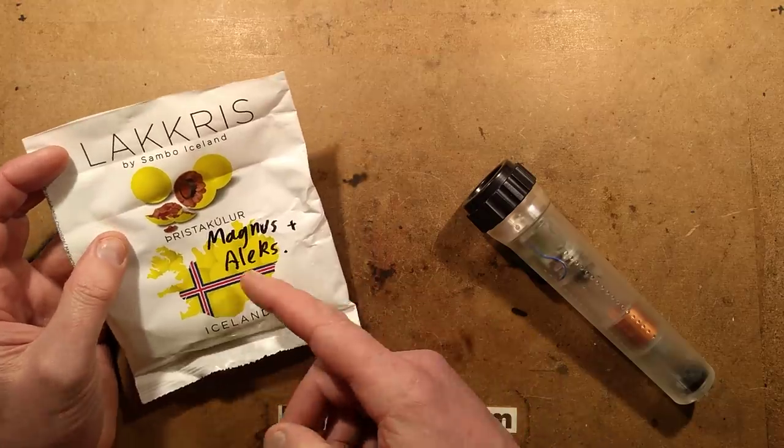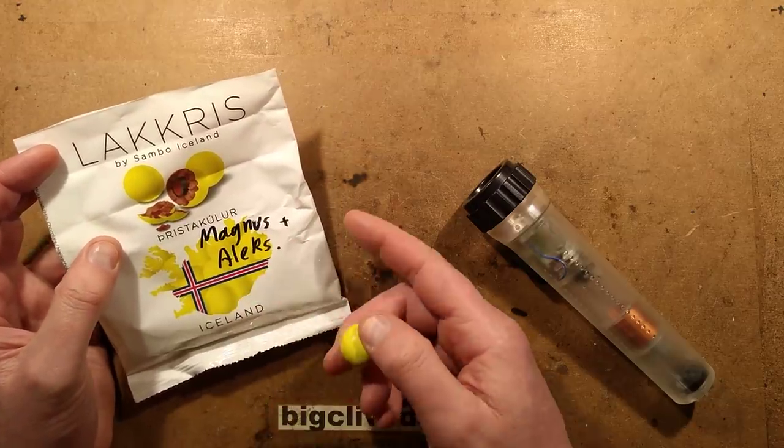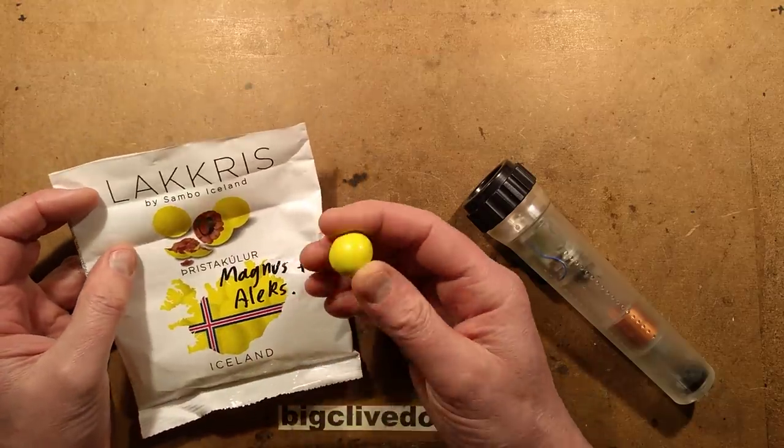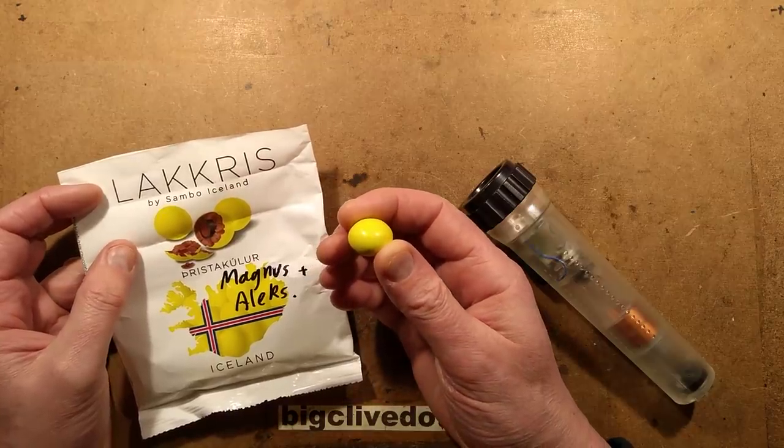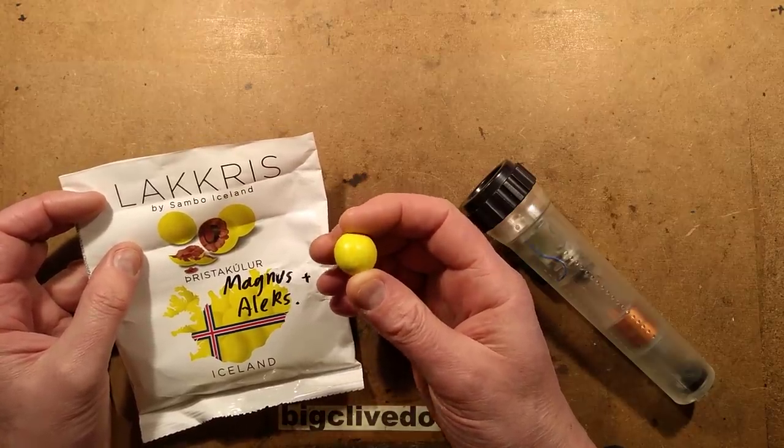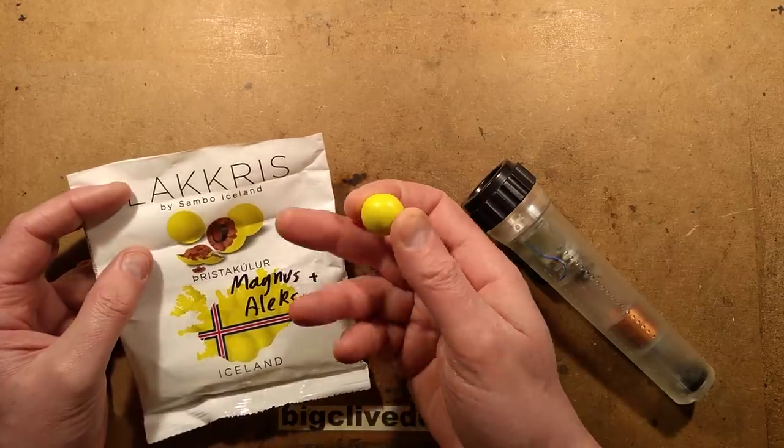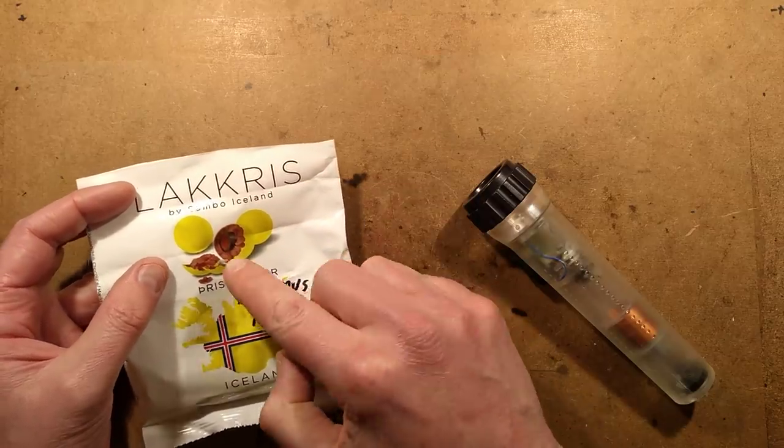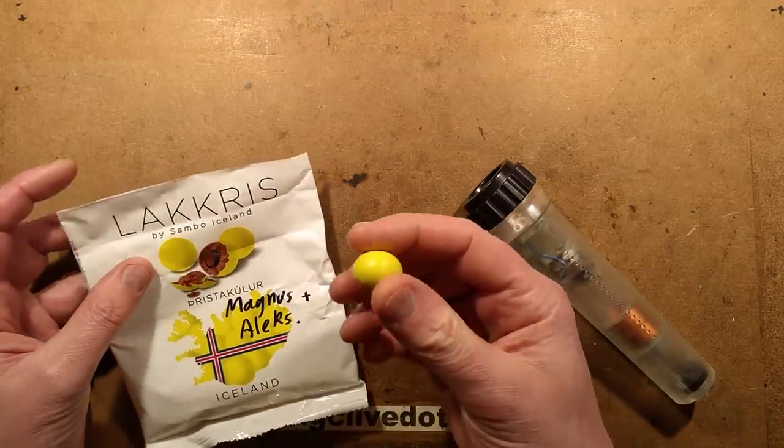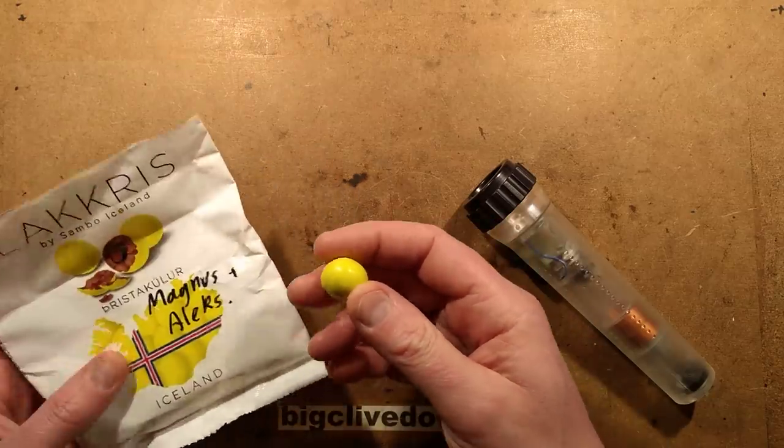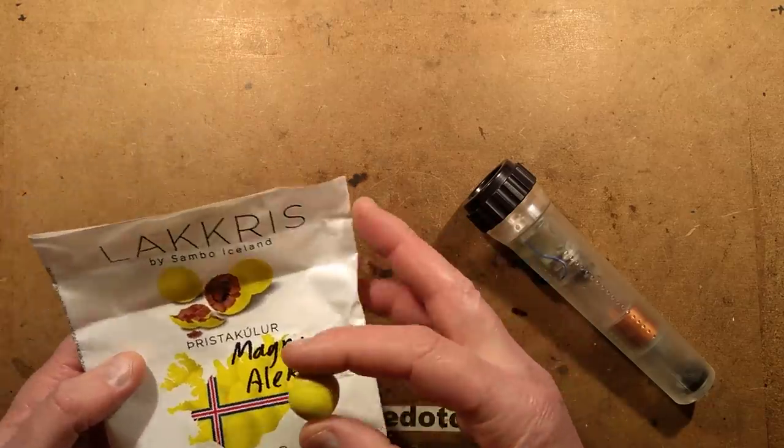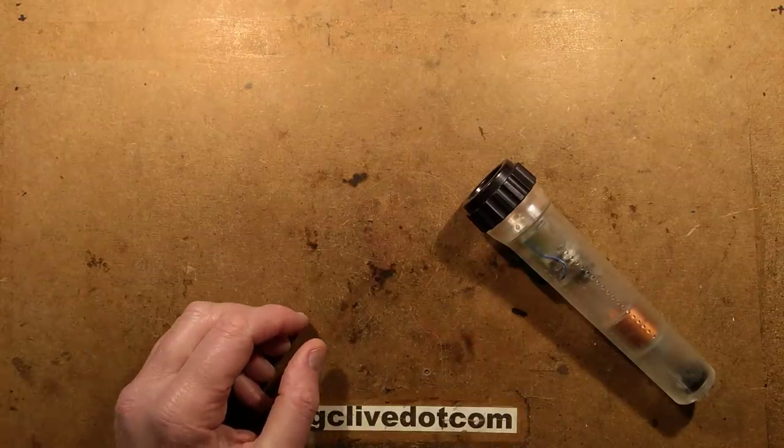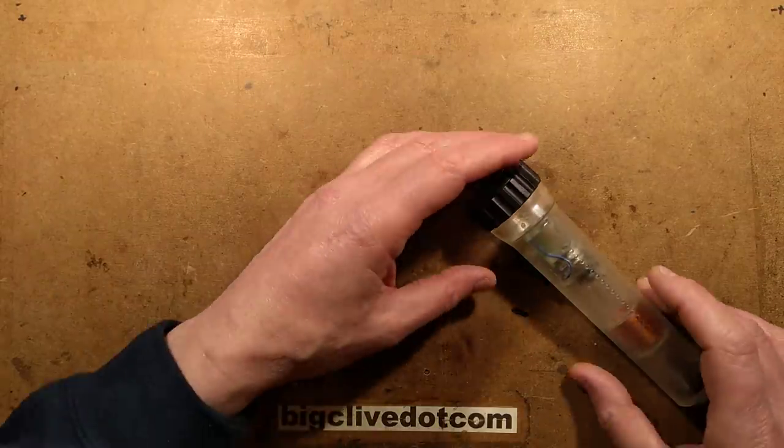Licorice from Lacrys by Sambo Iceland which was kindly sent by Magnus and Alex. You could almost think of it as a licorice M&M - basically a sugar shell filled with chocolate and then licorice filled with chocolate again. The Icelandic candy, their sweets are basically a lot of licorice and chocolate and marzipan and stuff like that, they're very nice. So very grateful for those.